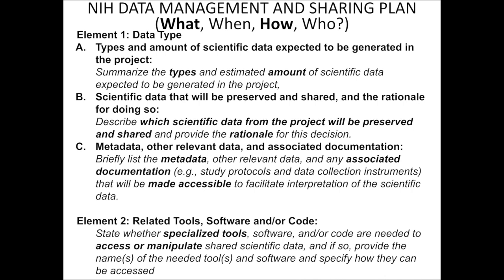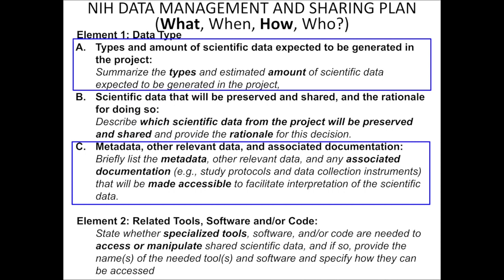Element one has to do with data type. It asks investigators to enumerate the types and amount of data expected, to discuss which of these will be preserved and shared and why, and provides reminders that data also requires metadata and other relevant documentation, so that shared data is most usable to the community. Element two addresses the related tools and software necessary to access data — making sure data that is shared can actually be utilized by the user community.